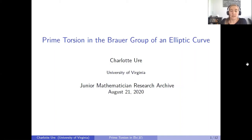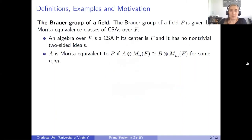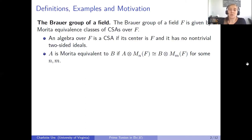Let's get started with just a couple of definitions about the Brauer group and some examples. The Brauer group of a field is given by Morita equivalence classes of central simple algebras over that field. An algebra over a field F is called a central simple algebra, or CSA, if and only if its center is F and it has no non-trivial two-sided ideals.